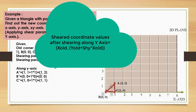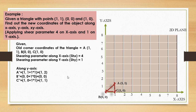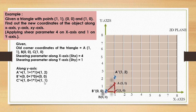For B, since both coordinates are 0, B'' = (0, 0). For C dash: x remains 1 as the X old value of C, and y' = 0 + Sh_y × x = 0 + 1 × 1 = 1, so C'' = (1, 1). Plotting these points and connecting them gives the sheared object along the Y axis.